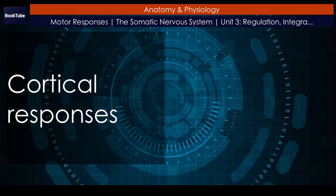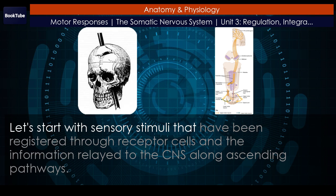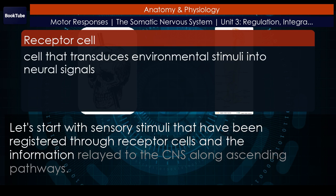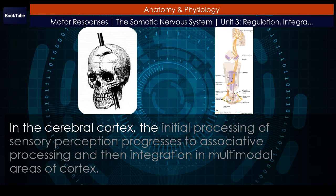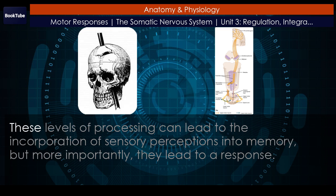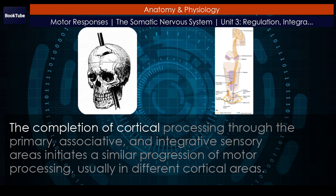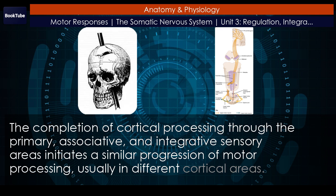Let's start with sensory stimuli that have been registered through receptor cells and the information relayed to the CNS along ascending pathways. In the cerebral cortex, the initial processing of sensory perception progresses to associative processing and then integration in multimodal areas of cortex. These levels of processing can lead to the incorporation of sensory perceptions into memory. But more importantly, they lead to a response. The completion of cortical processing through the primary, associative, and integrative sensory areas initiates a similar progression of motor processing, usually in different cortical areas.